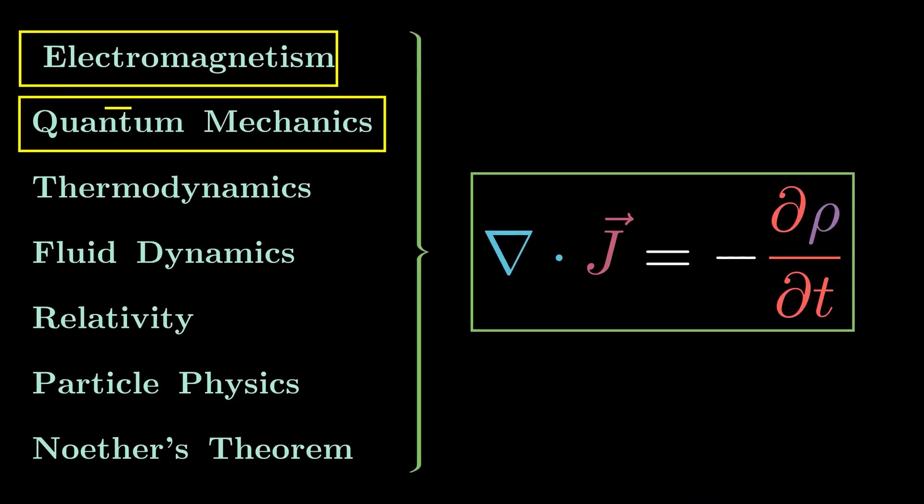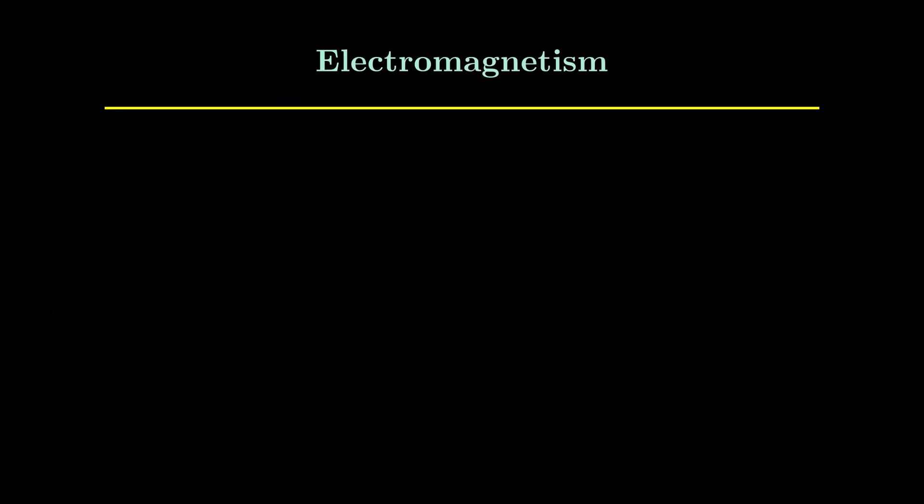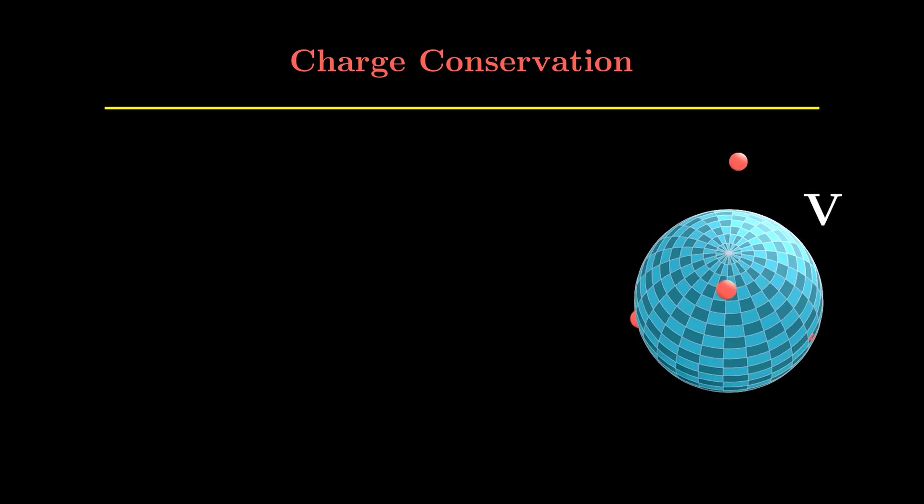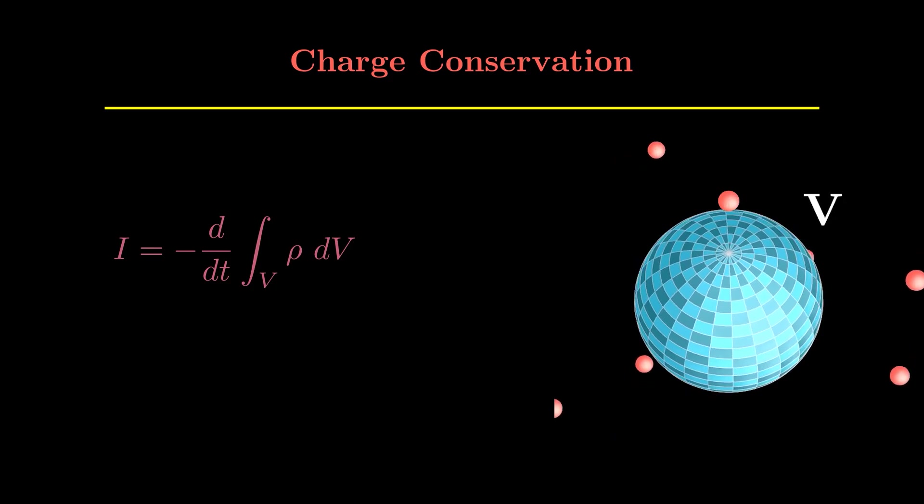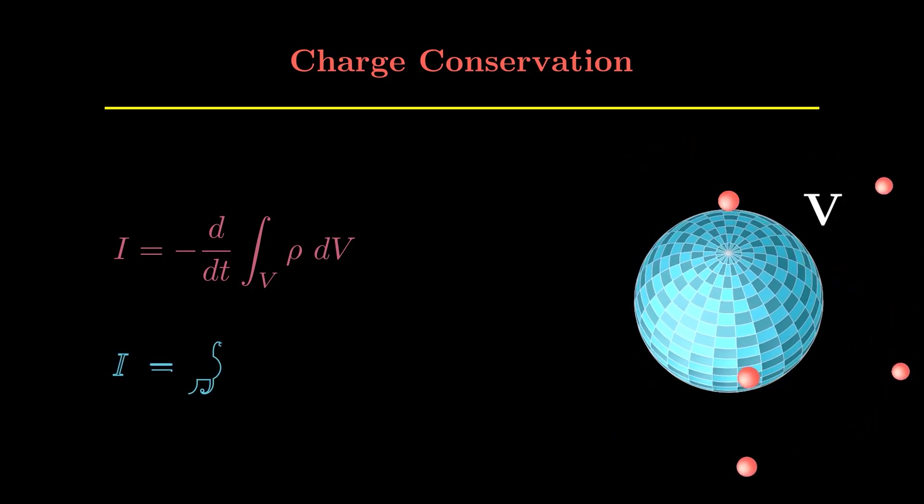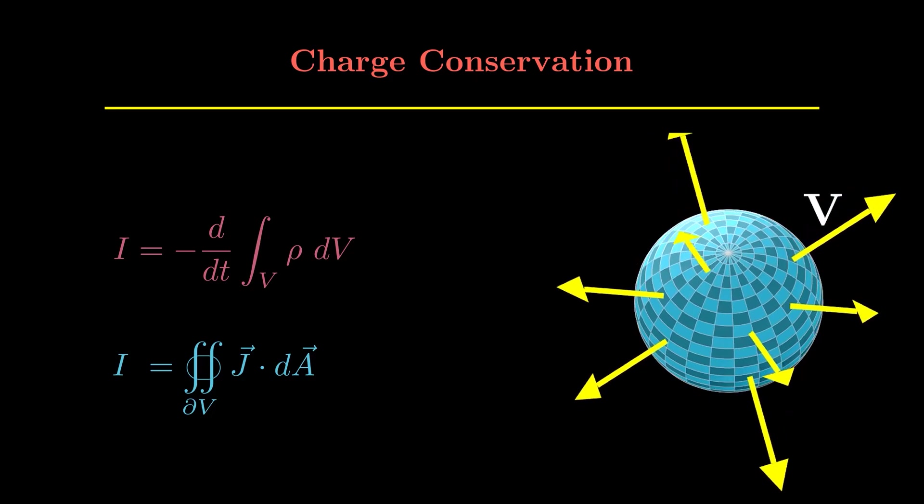All right, now let's see the particular case of electromagnetism. Here we will consider two cases: one is charge conservation and the other is energy conservation. So let us start with charge conservation. Again, consider some volume V—it doesn't have to be a perfect sphere, it can be anything.